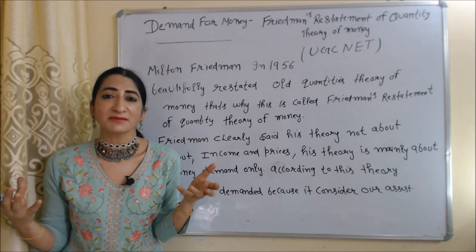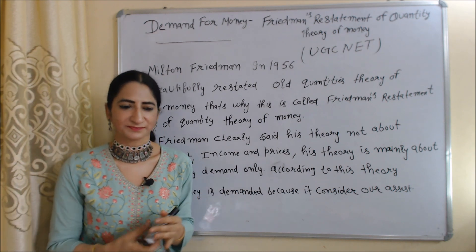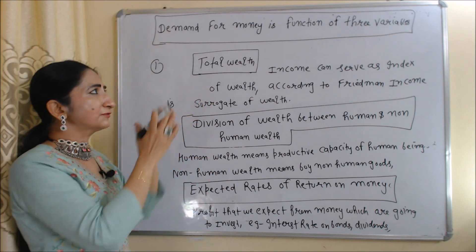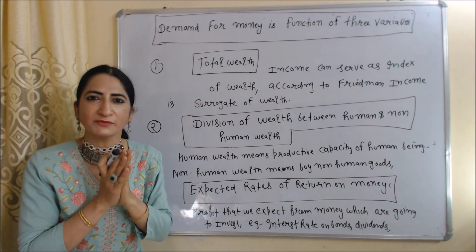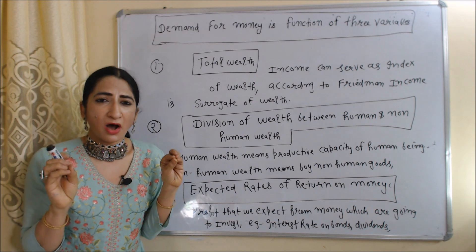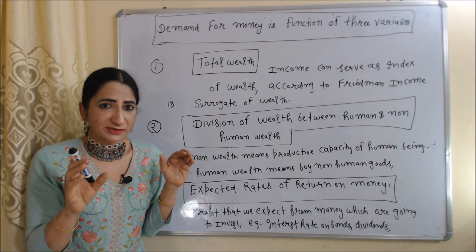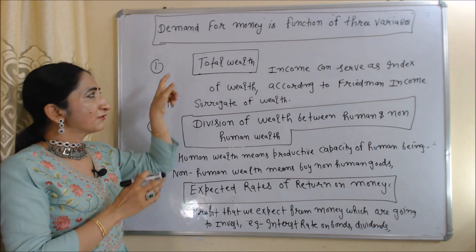This theory is mainly about money demand, and according to this theory, we demand money because we consider money as our asset. Now we are going to talk about how demand for money is a function of three variables — how much money we demand depends on these three variables.